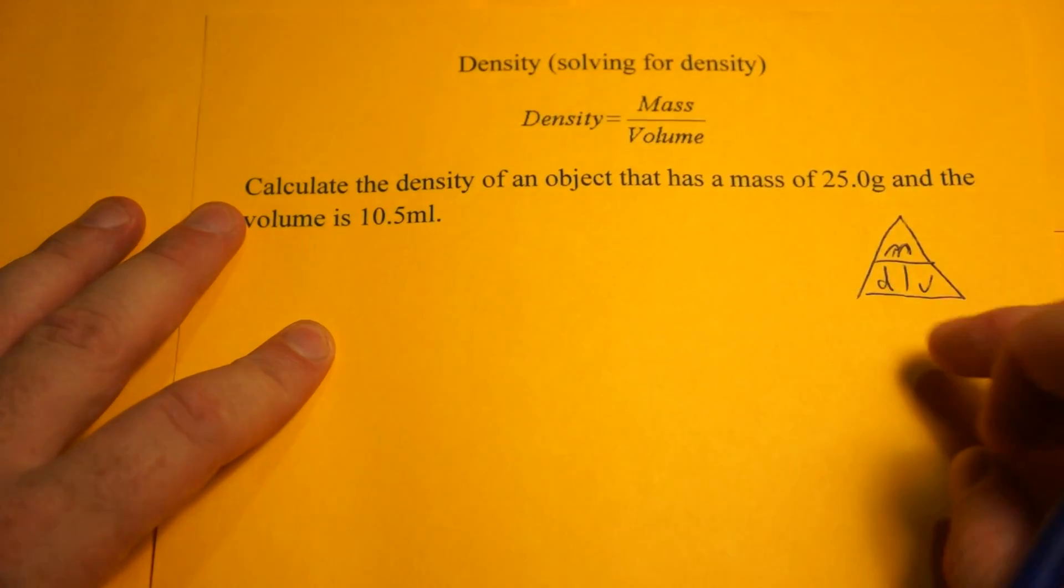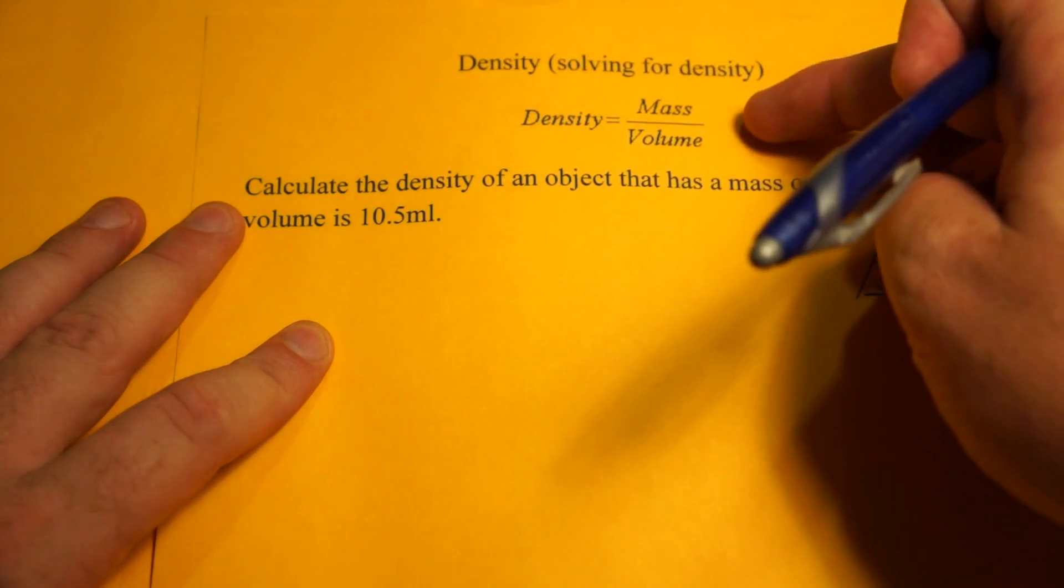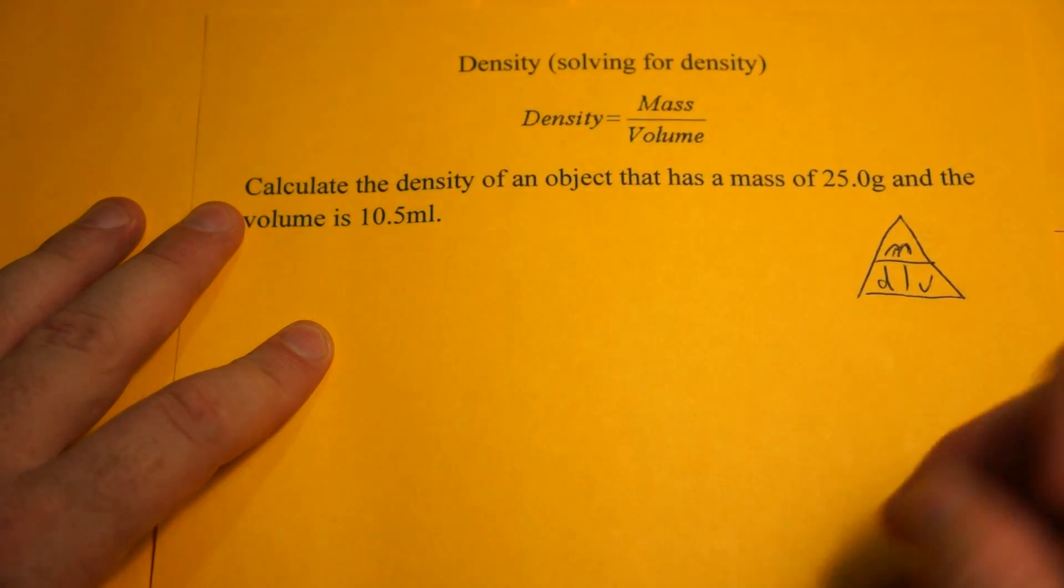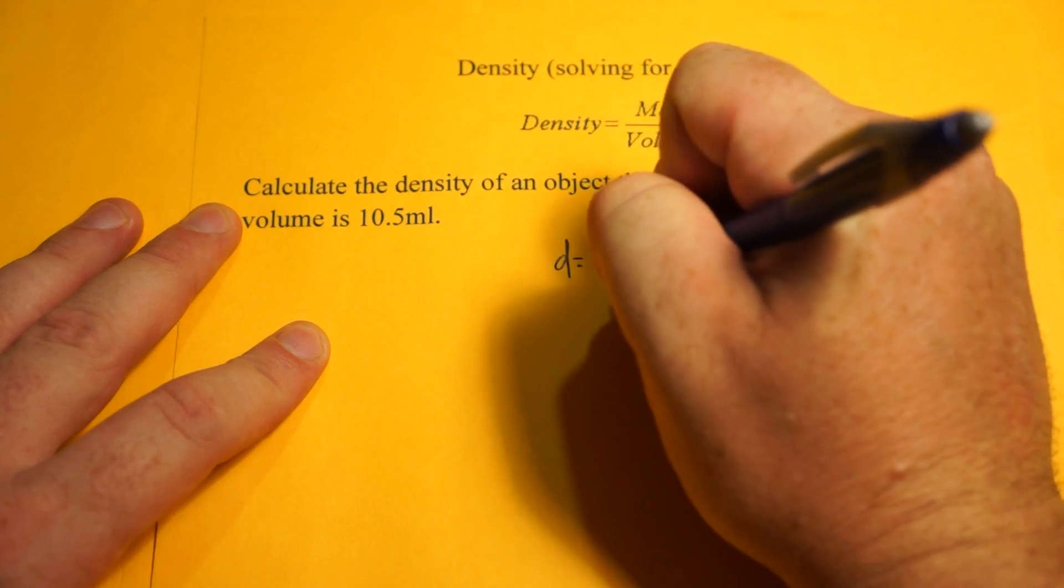In this case I want to know the density. So density equals mass over volume. Density equals mass over volume. So D equals M over V.